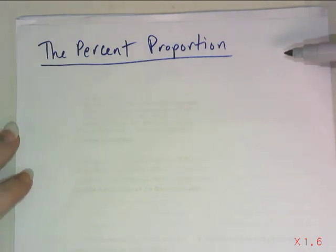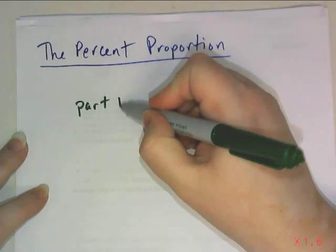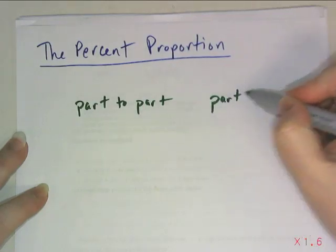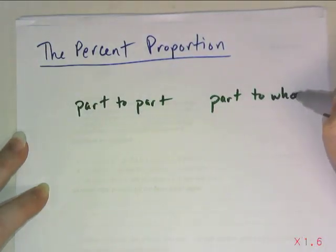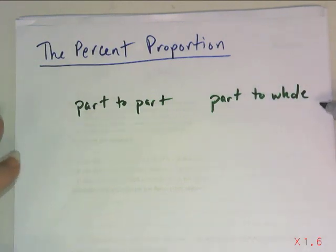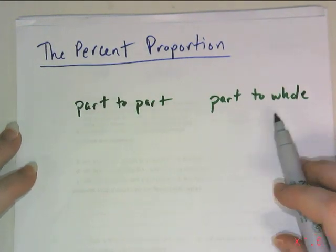There are some different types of ratios, and we've talked about our part-to-part ratios versus our part-to-whole ratios. If we're going to do percent proportion, we need to be working with part-to-whole, because percent is going to involve what percentage of the whole. However, if you're given a part-to-part ratio, it's pretty easy to convert it to a part-to-whole ratio.